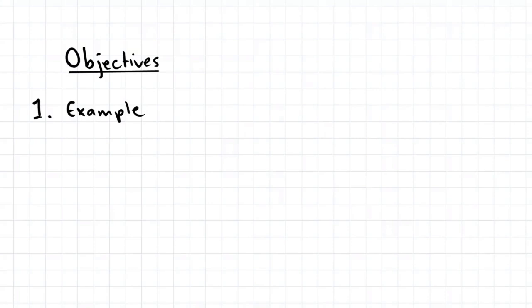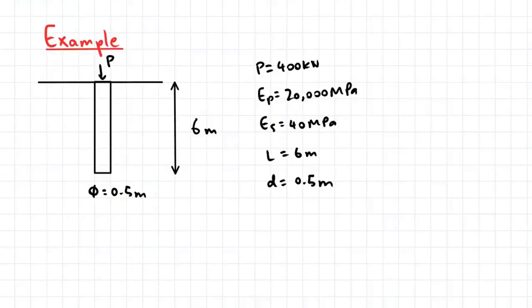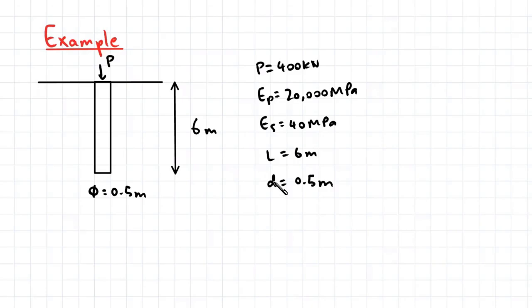The objective of today's video is to go through an example covering the vertical settlement of single piles. We have a pile which has been driven into the soil with a load of 400 kilonewtons applied to the top. The modulus of the pile is 20,000 megapascals, the modulus of the soil is 40 megapascals, the length of the pile is 6 meters, and the diameter is 0.5 meters.